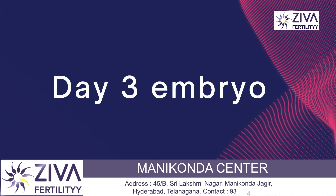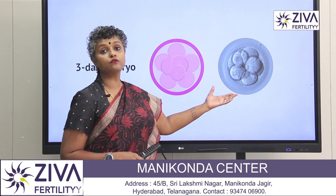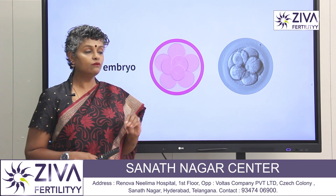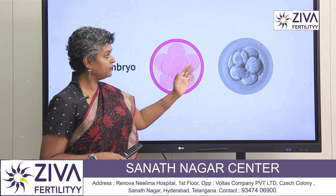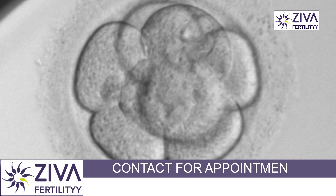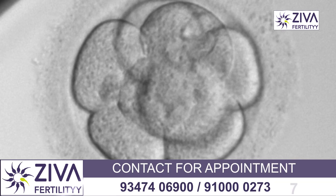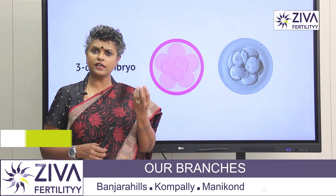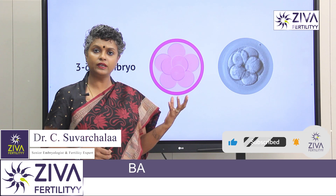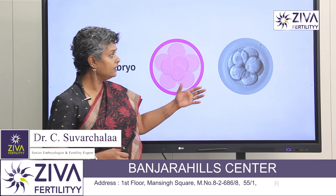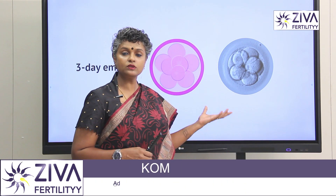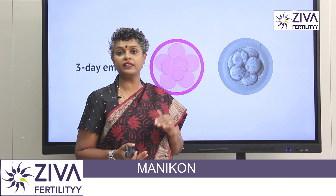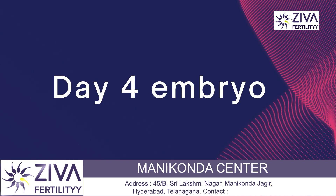Looking at day three embryos, you can see that more cells have formed. We are looking at at least six to eight cells, which should be equal in size and shape. They should not have the multi-nucleation or the fragments — the bubbles of cytoplasm — so that they are of good quality. Such embryos are selected for either transfer or for freezing for a subsequent embryo transfer.